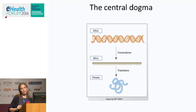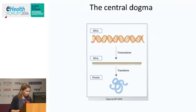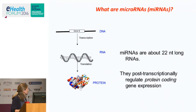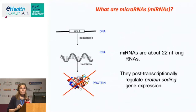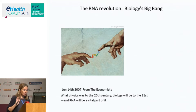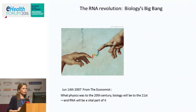Now one specific example: this is what changed the central dogma still found in biology textbooks. The central dogma was: DNA, then RNA, then protein. But we realized there are also other genes on the DNA that produce RNA — and what they do is stop the protein even if the gene is present. These are called microRNAs, and they came into the picture in 2001. By 2007 the RNA revolution was recognized as a biological big bang.